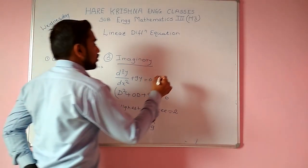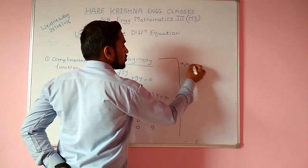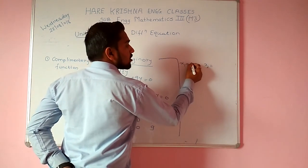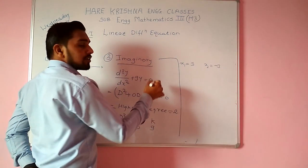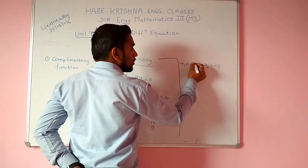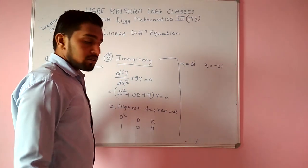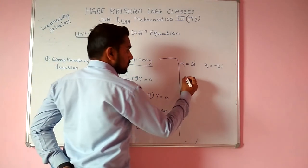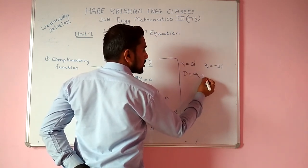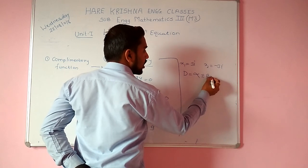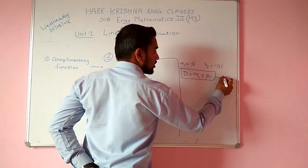You get the answer: x1 = +3i and x2 = −3i. But this is the imaginary method, so we put 'i' after the solution. Our standard form for imaginary roots is alpha ± beta·i.